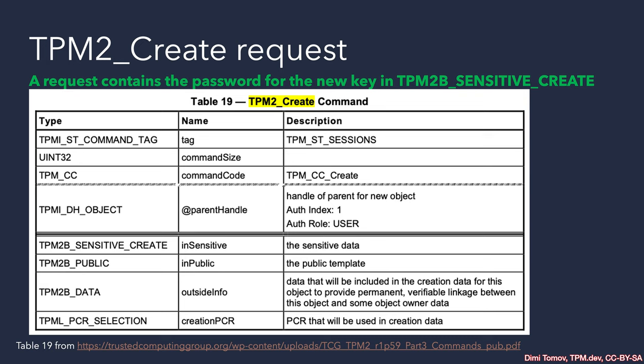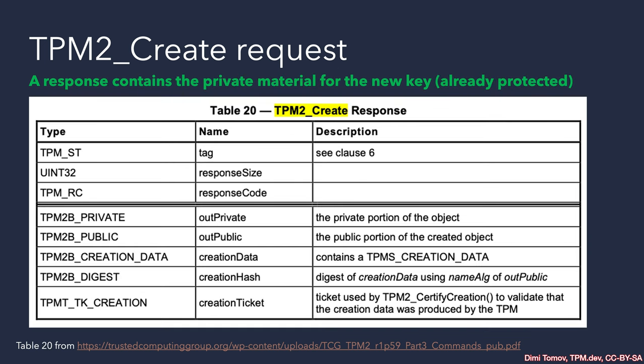The inSensitive field — where 'in' is input and 'sensitive' refers to critical data we need to keep private — is sent to the TPM. When this command is sent unencrypted, the password authorization for the child key is there in plain form. What parameter encryption does is perform encryption using the session key created during the creation of the TPM session for parameter encryption. The TPM expects the first parameter of this command to be encrypted, and uses the exchanged session key to decrypt it. After execution, the TPM can also respond with the first encrypted parameter — in the case of TPM2_Create, this is the actual private material of the new child key.